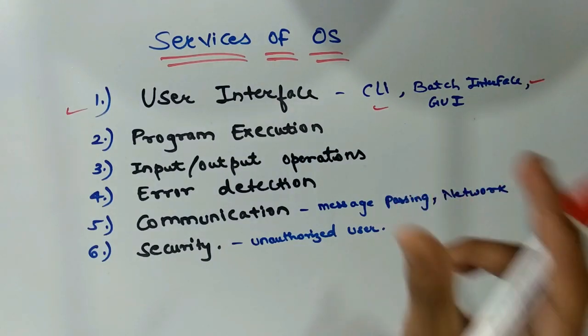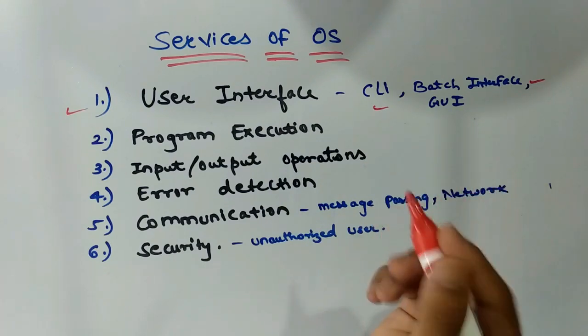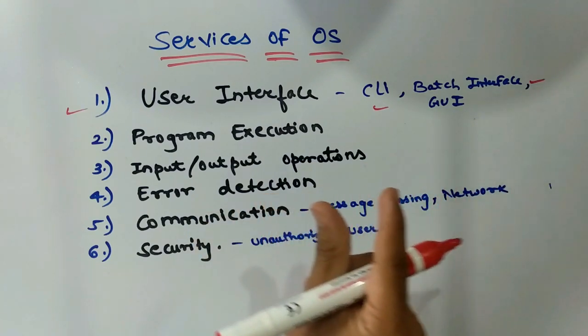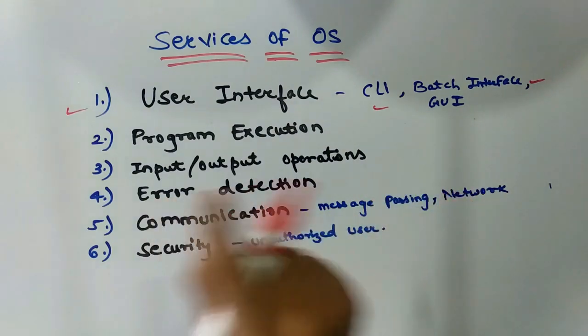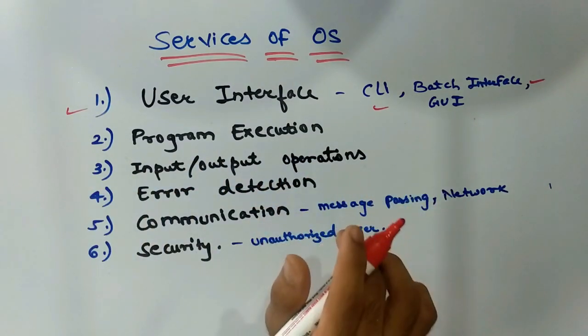Batch interface allows a command environment which gets executed one by one or sequentially. User creates a batch file which contains multiple executable commands in sequence. The batch file is executed to execute the set of commands included in it.